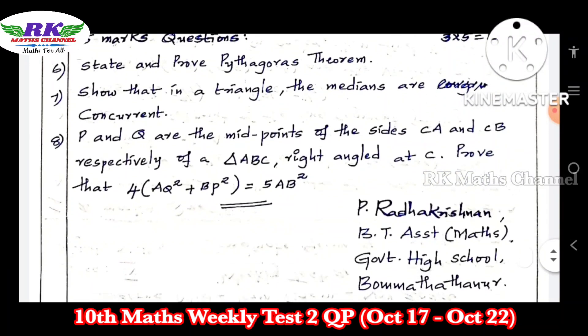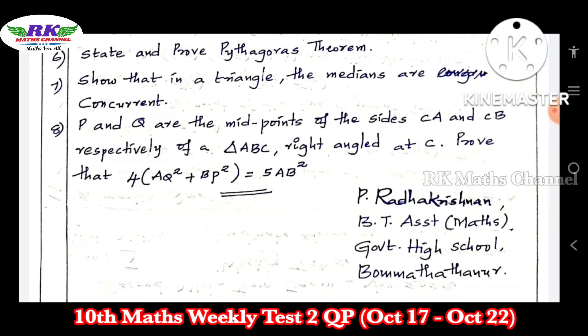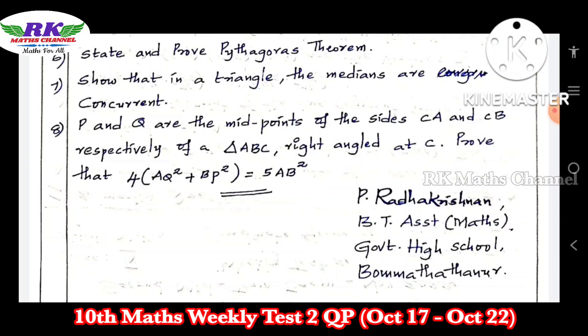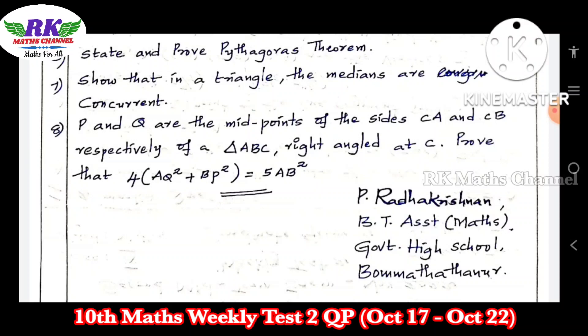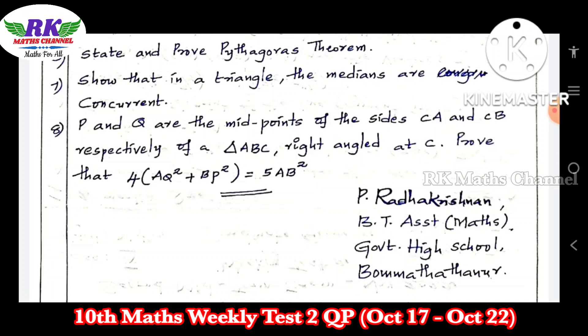Question number 8 is an example problem: 4AQ² + BP² = 5AB². Prove it. This is the example problem for the exam.